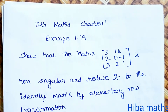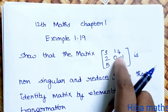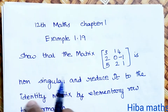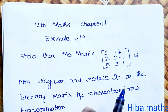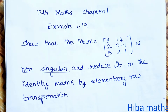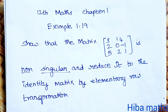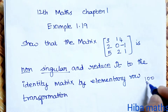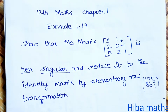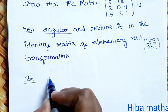Hello students, welcome to Heba Max 12th standard, chapter 1, example 1.19. Show that the matrix [3 1 4 / 2 0 -1 / 5 2 1] is non-singular and reduce it to the identity matrix by elementary row transformation. We will find the determinant value to show it is non-singular.